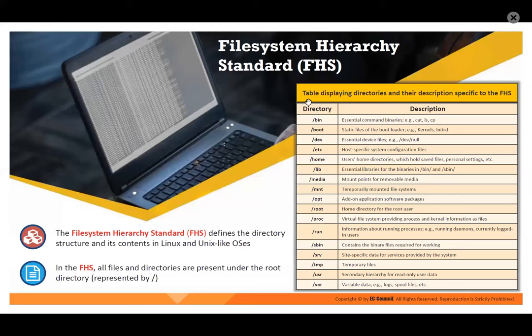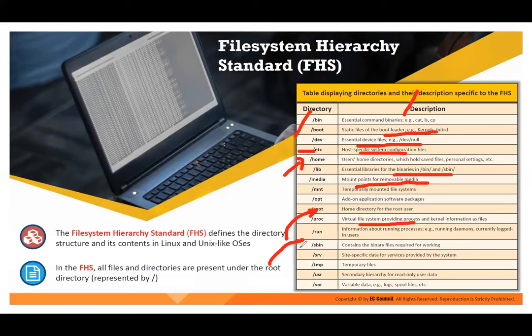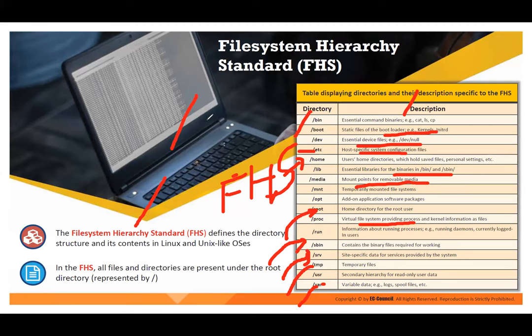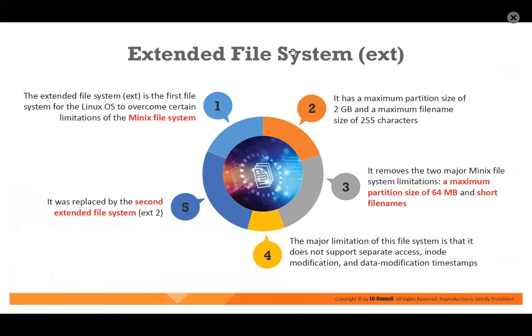In Linux, there is something on the kernel side: bin for binaries, boot for the bootloader and kernel, dev for device files, etc for system configuration files, home for user files, lib for libraries, media for mounting removable media, root for the home directory of the root user, proc for the virtual file system, run for running processes, bin for binary files, tmp for temporary files, and var for logs and spool files. This is called the file system hierarchy standard — FSH — in which directories are present under the root denoted by the slash symbol.